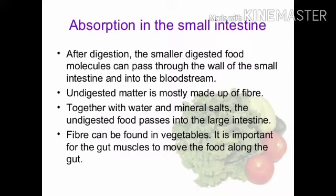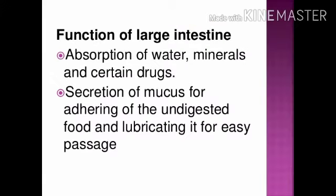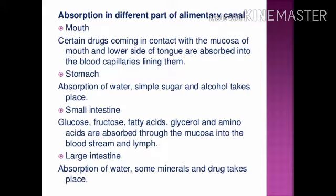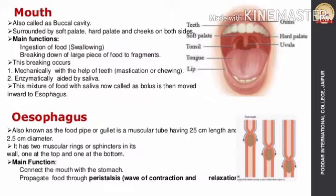After digestion, the smaller digested food is absorbed into the bloodstream and the undigested matter passes into the large intestine. The main function of the large intestine is to absorb water and minerals from the digested food and to secrete mucus to lubricate the undigested food for easy passage. Absorption is the process by which nutrients pass from the alimentary canal into the blood through the mucous membrane. Amino acids, fatty acids, glycerol, salts, and vitamins are absorbed. About 90% of absorption and digestion occurs in the small intestine, and the remaining 10% in the mouth, stomach, and large intestine. The last process is egestion — undigested food becomes feces, stored in the rectum before being passed out through the anus.